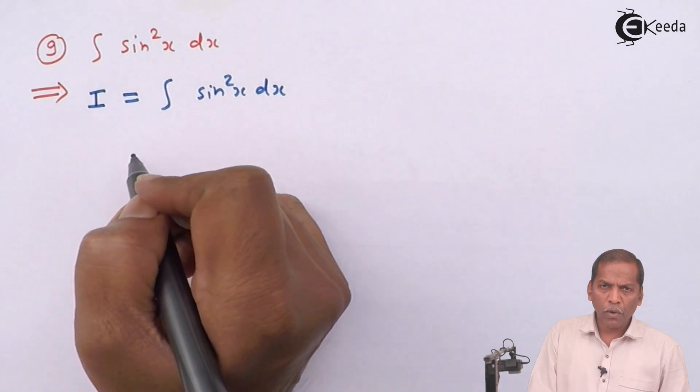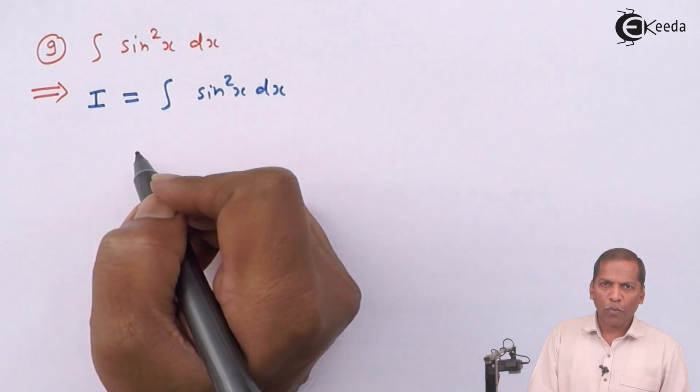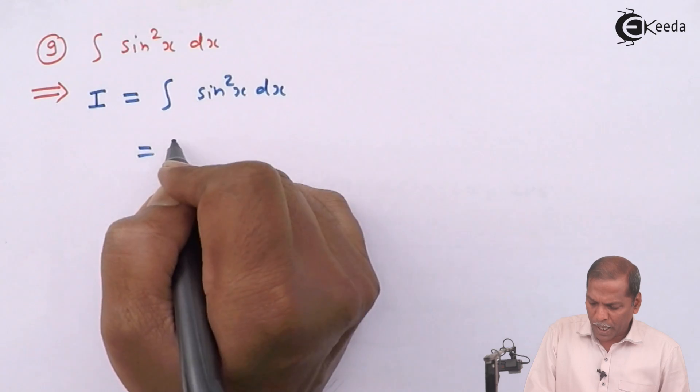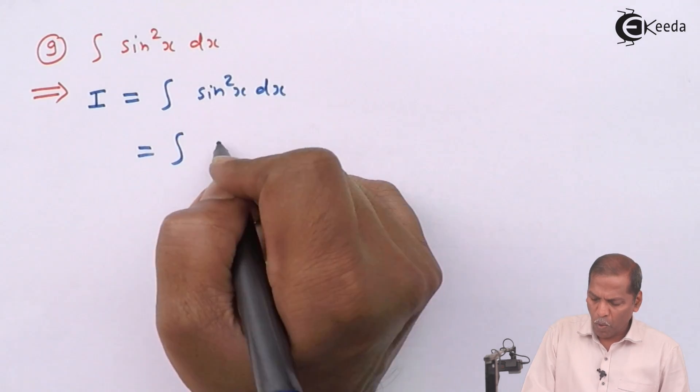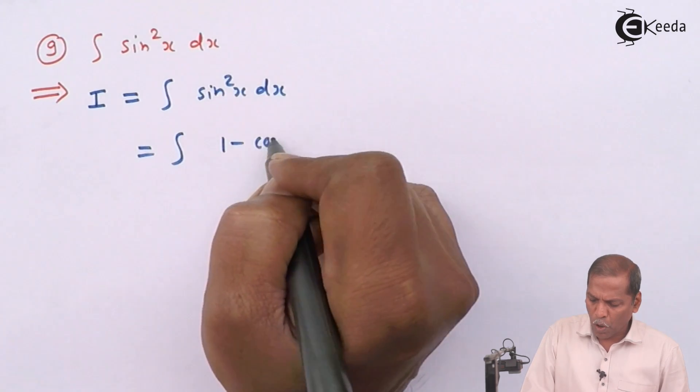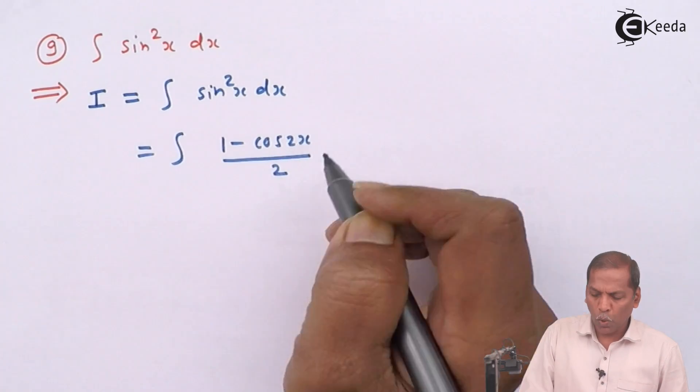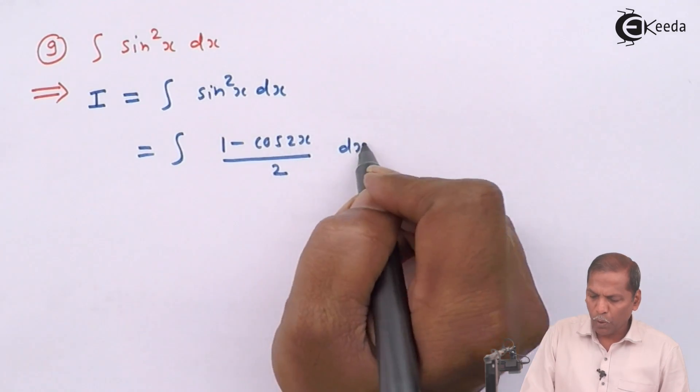Now here we use trigonometric formula that sine square x can be written as one minus cos of 2x upon 2 into dx.